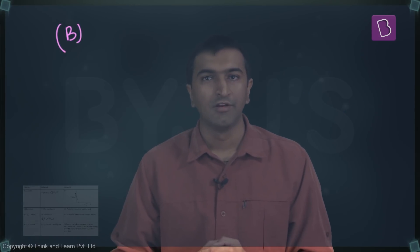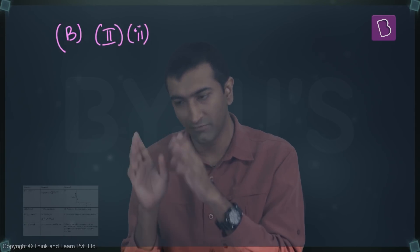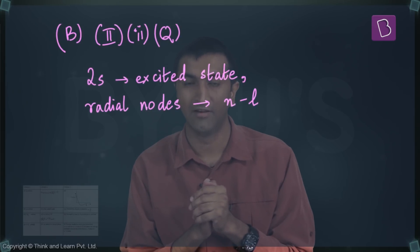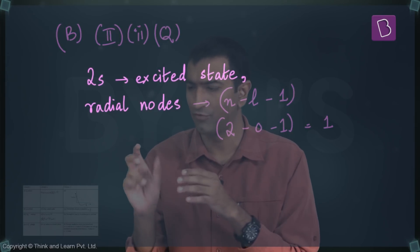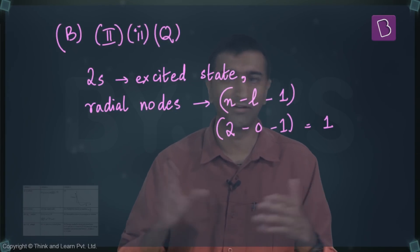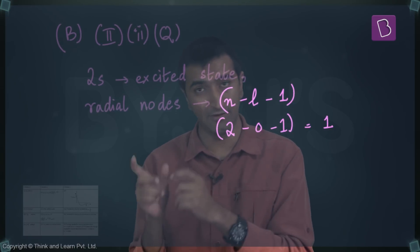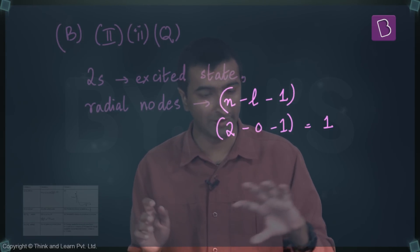Here in option B, I have 2 from the second column matching with 2 from the first column which matches with Q from the third column. Let's do step by step. 2s has one radial node, is this correct? I think so. The formula for radial nodes is simply n minus l minus 1. n is 2, l is 0 because it's an s orbital, and 1, so the number of radial nodes is simply 1.